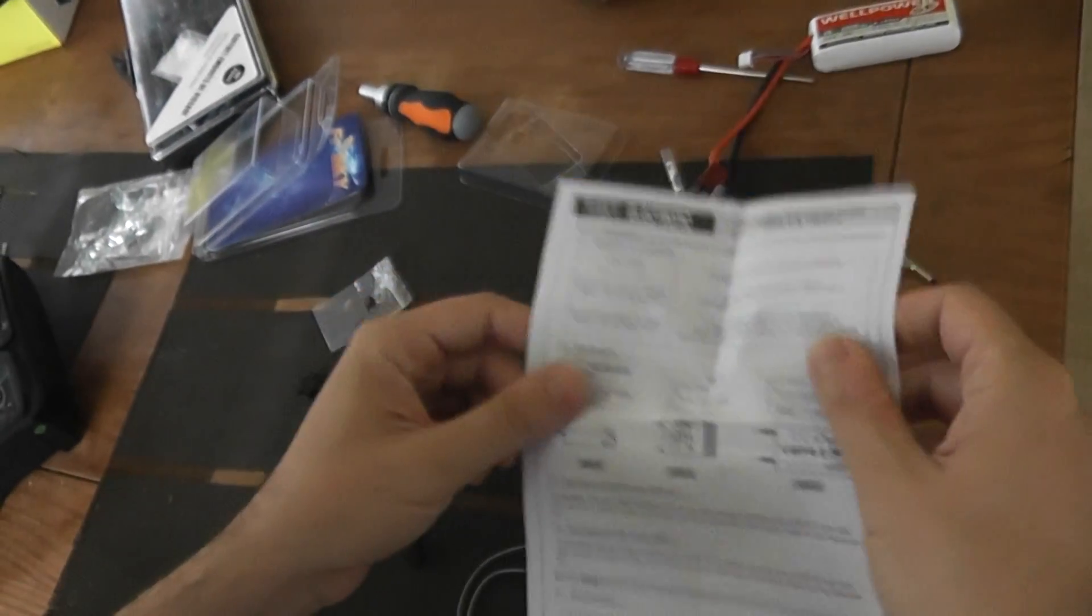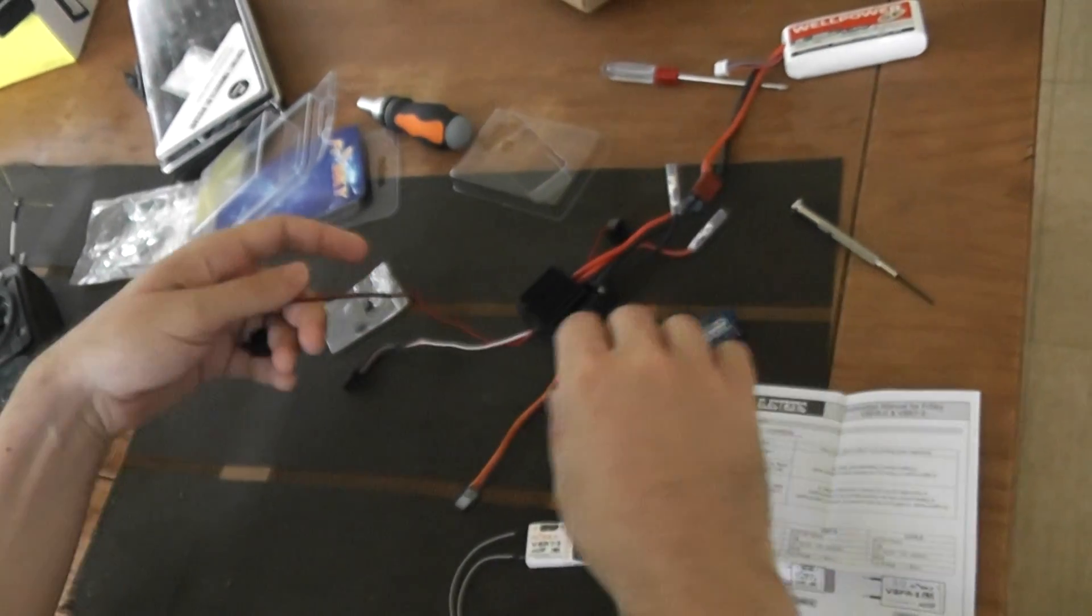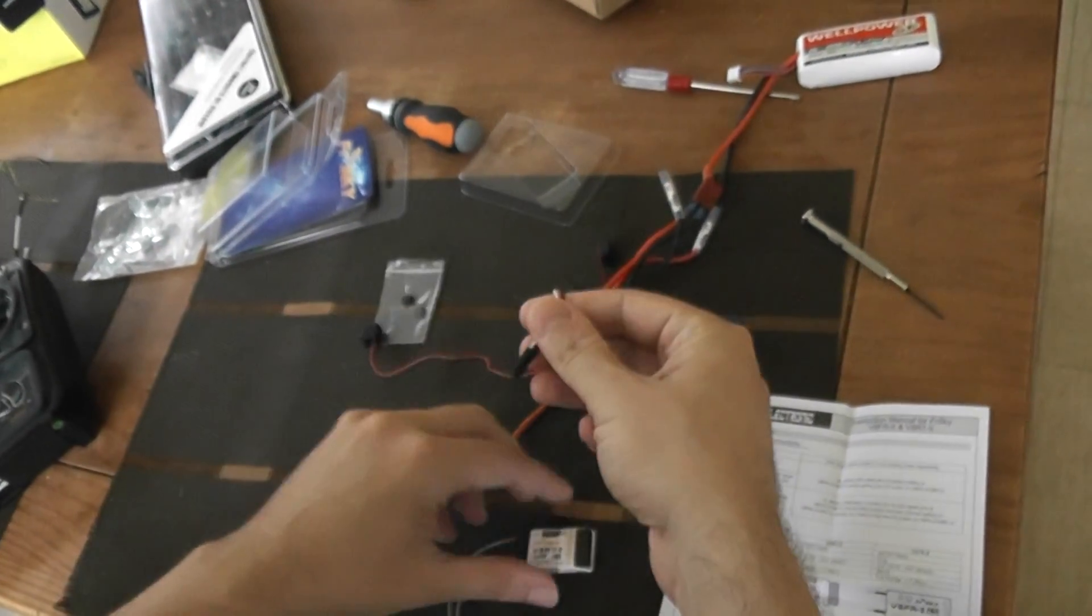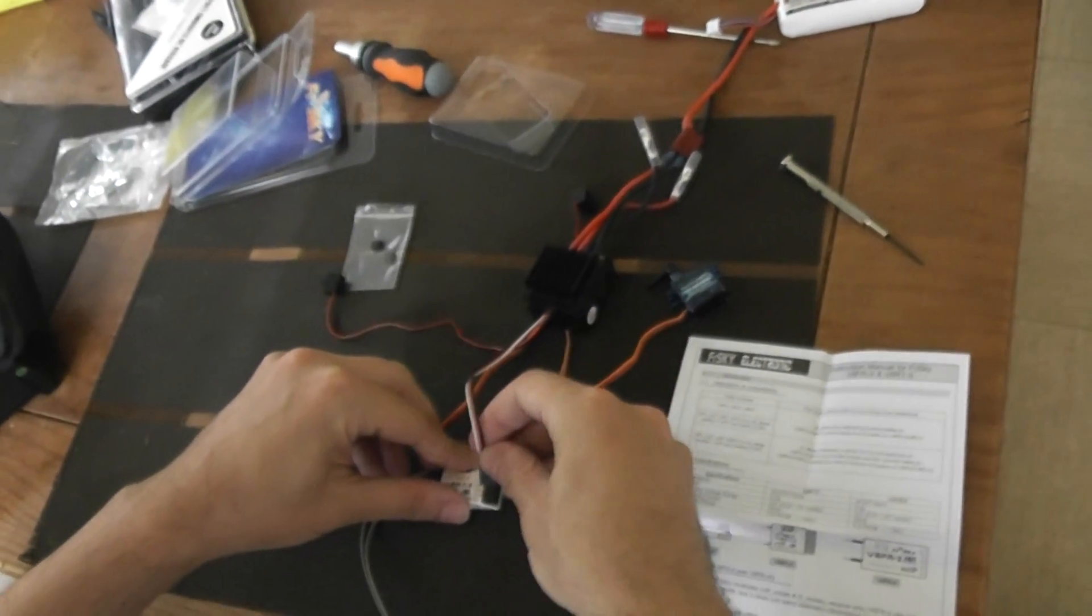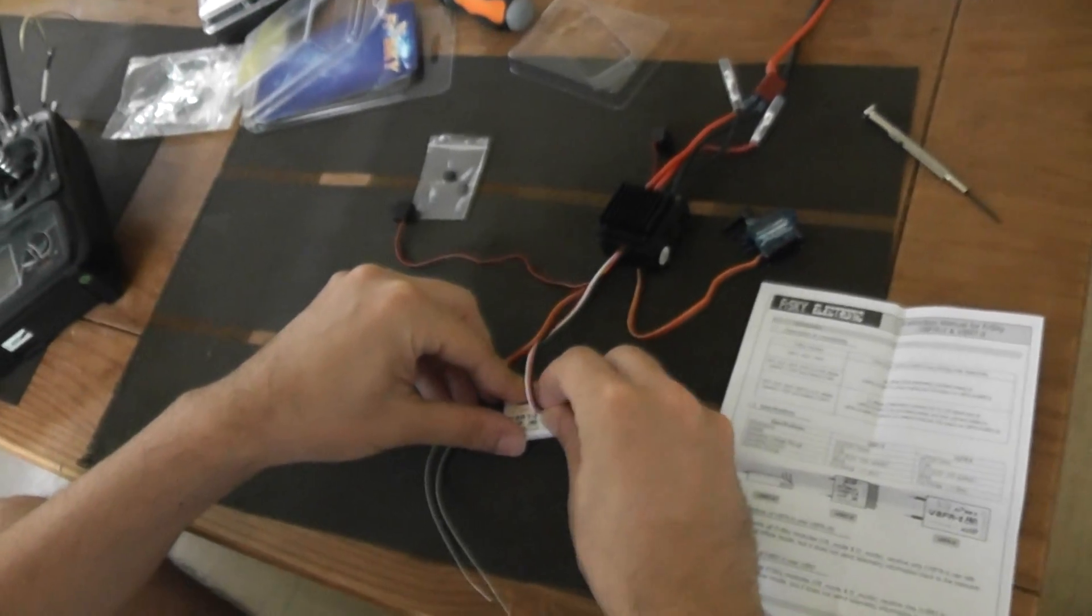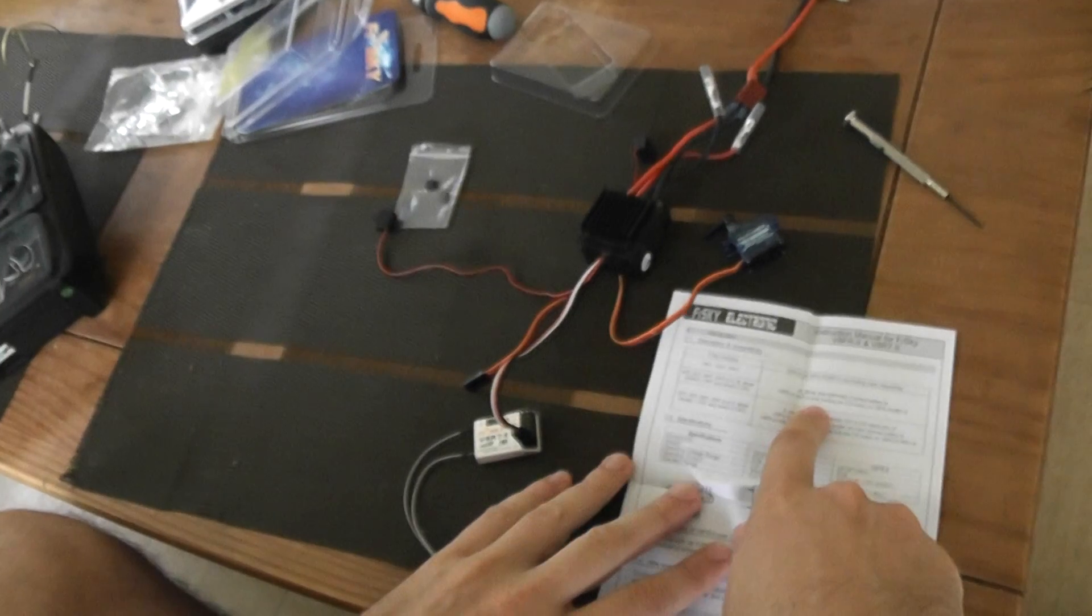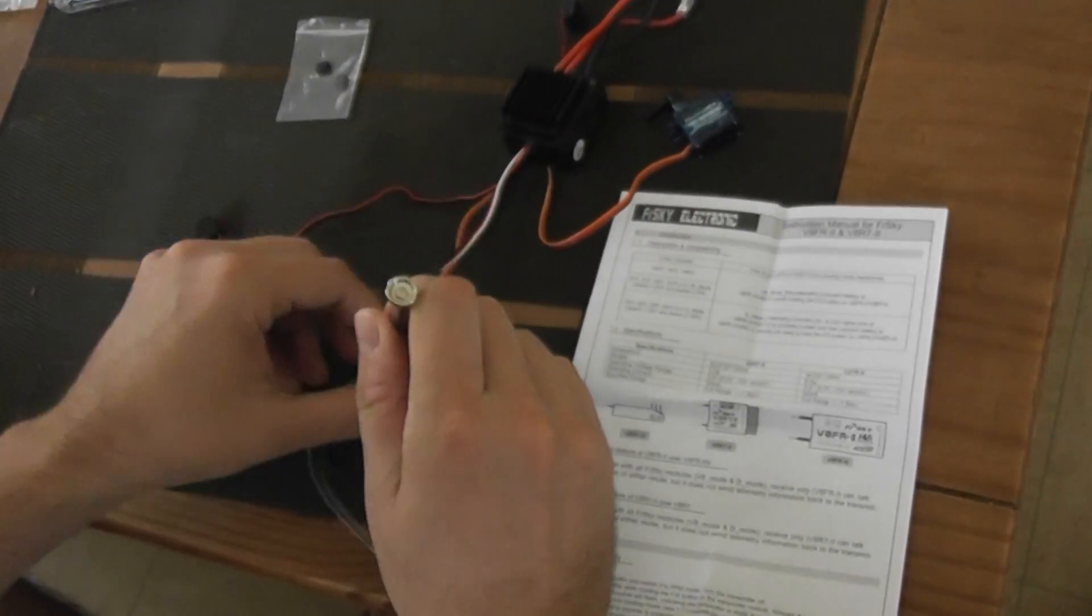So the first one is very easy. First I will use this ESC in order to give some power to the receiver. I plug into channel 8 like this. The first method is to press long the FS button while turning on. So I will use this small screw.